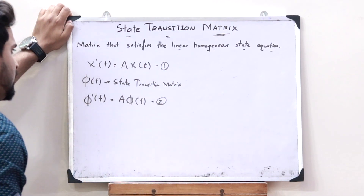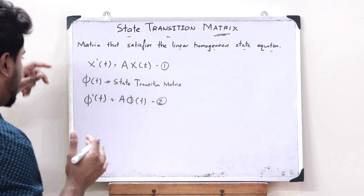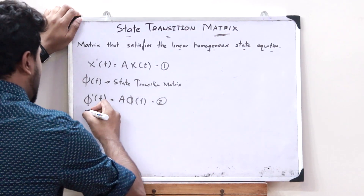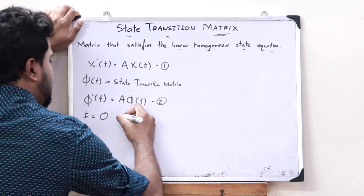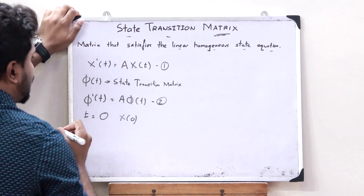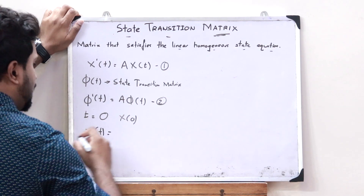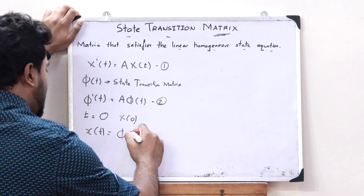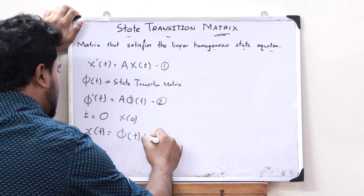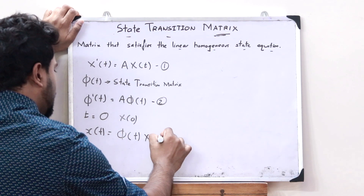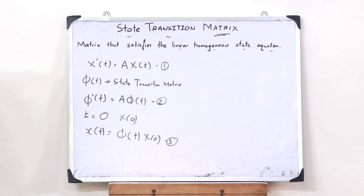Now, if the initial condition — that is, when time t = 0 — is given as x(0), then in such a case, x(t) would be given as x(t) = phi(t)·x(0). Let this be taken as equation number 3. Now let us derive the value of this particular state transition matrix.